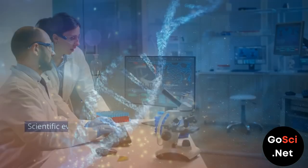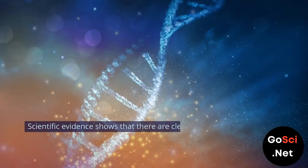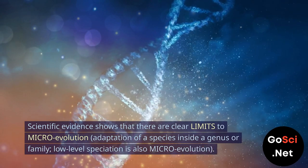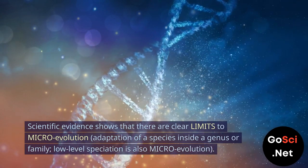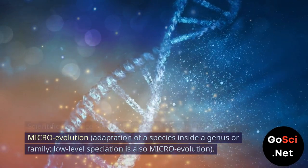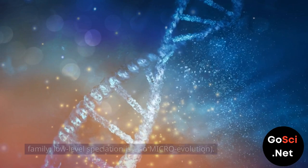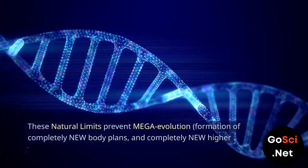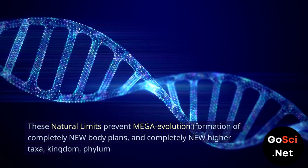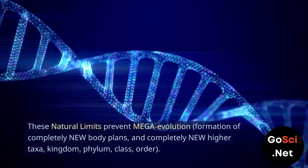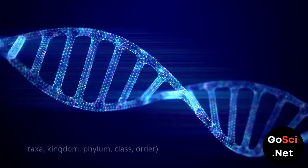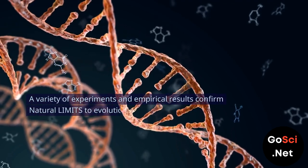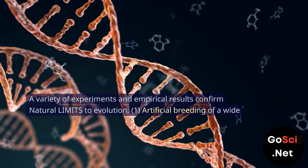Natural limits to evolution: Scientific evidence shows that there are clear limits to micro-evolution — adaptation of a species inside a genus or family. Low-level speciation is also micro-evolution. These natural limits prevent mega-evolution, which includes formation of completely new body plans and completely new higher taxa: kingdom, phylum, class, order. A variety of experiments and empirical results confirm natural limits to evolution: 1. Artificial breeding of a wide variety of animals. 2. Induced mutation experiments in fruit flies. 3. 60,000 generations of bacterial micro-evolution experiments. 4. 1e20 malarial parasites. All of these confirm natural limits to micro-evolution.